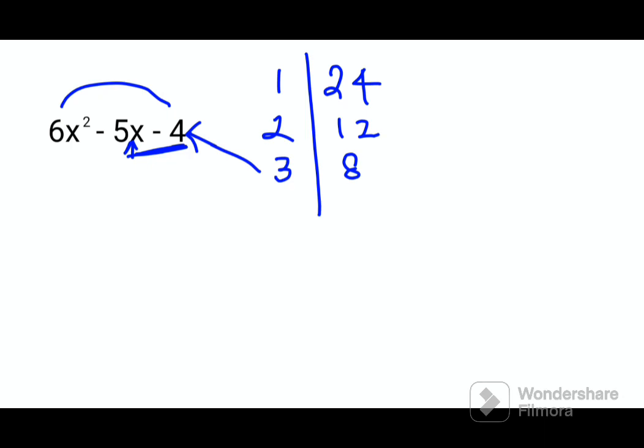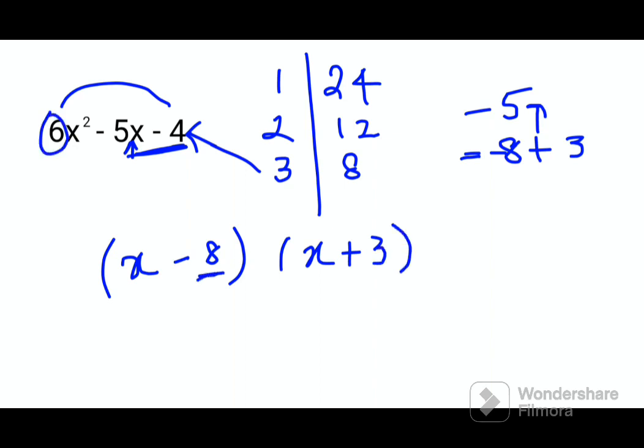So again 1 and 24, then 2 and 12, then 3 and 8. Now see, if you look closely I get my factors of 5 of this particular number. I want a negative 5. That can happen only when I get -8 + 3, only then I will get a negative 5.